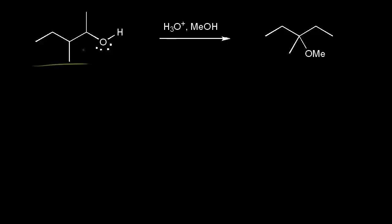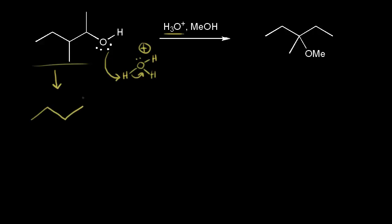This time we're starting with an alcohol. In the previous example the first step was loss of a leaving group, but if we showed the electrons going onto the oxygen to form the hydroxide ion, that doesn't work, because the hydroxide ion is a bad leaving group. So we actually have to protonate the alcohol first to form a good leaving group. The first step of this mechanism is a proton transfer — the alcohol functions as a base and H3O+ donates a proton. So the hydronium ion acts as our acid and our alcohol acts as our base. A lone pair of electrons on the oxygen picks up a proton from hydronium — so our first step is a proton transfer.